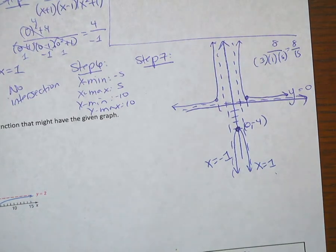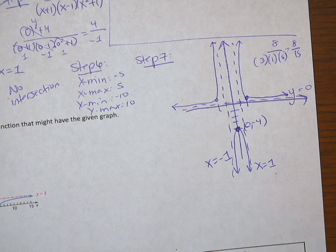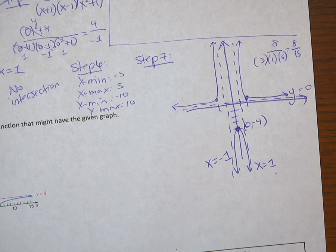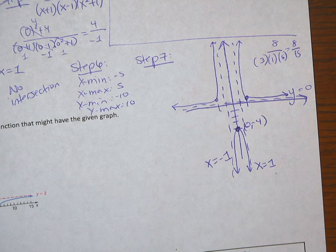We do need to make sure, again, that we label all of our intercepts and all of our asymptotes. That's it for step 7, and that is it for 1C. Thank you very much. Continue on with me to 1D.